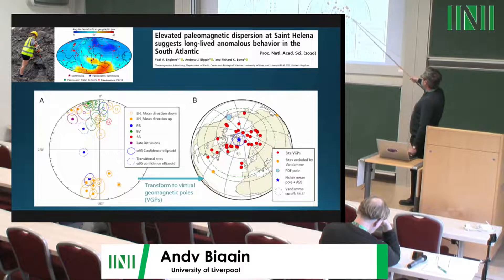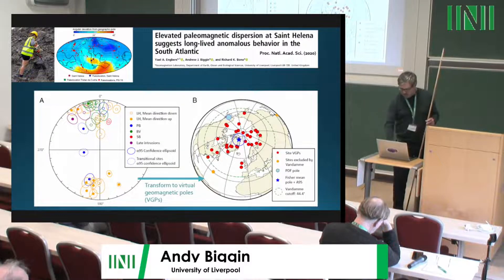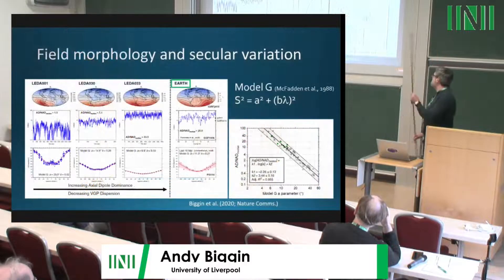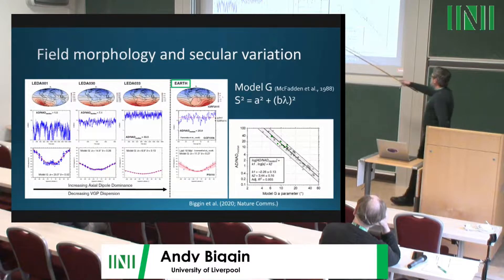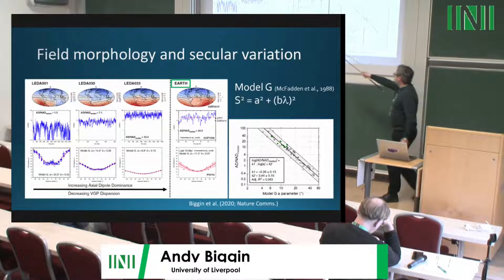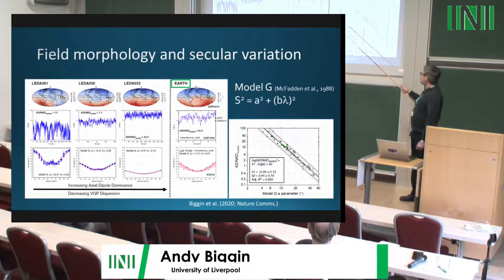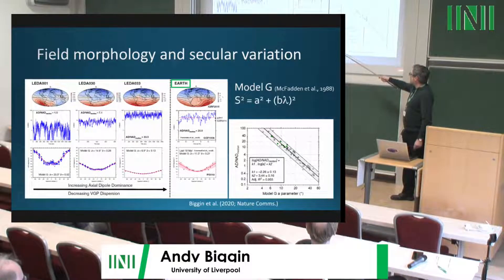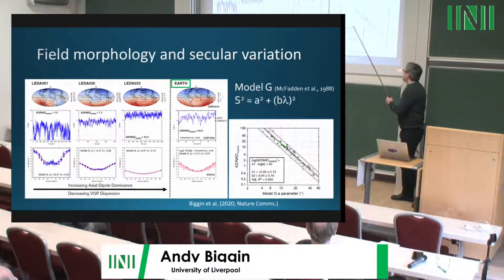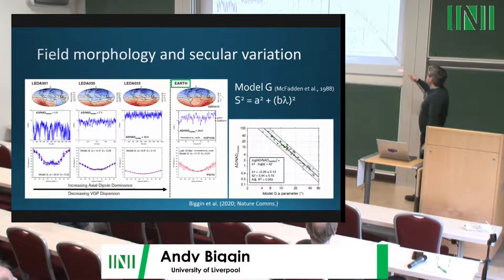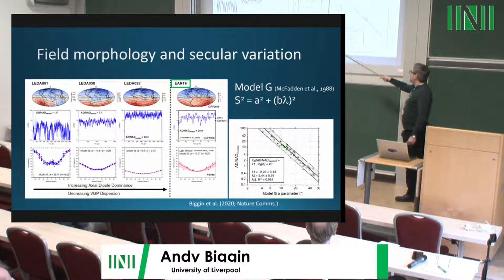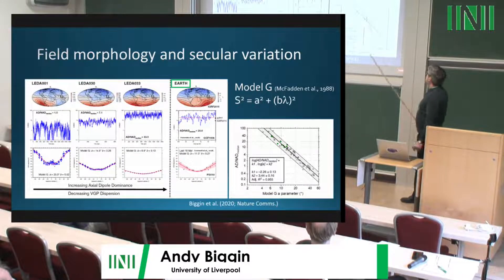VGP dispersion is just the angular standard deviation of the cloud of VGPs. Looking at VGP dispersion against latitude for volcanic rocks from the last 10 million years, dispersion increases as you move away from the equator. This can be fit by a simple quadratic model called Model G, with parameter A defining VGP dispersion at the equator and B defining its latitudinal dependence.